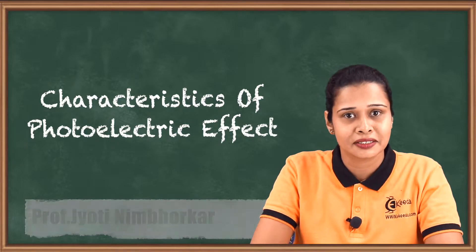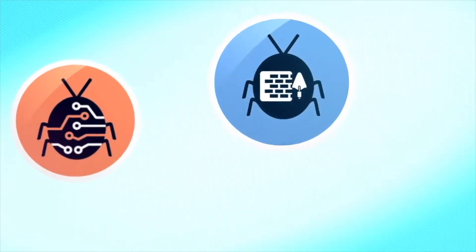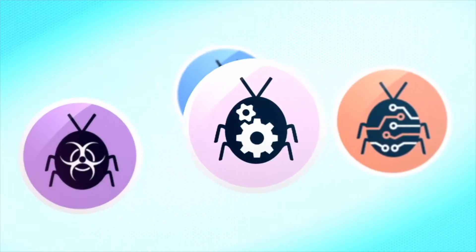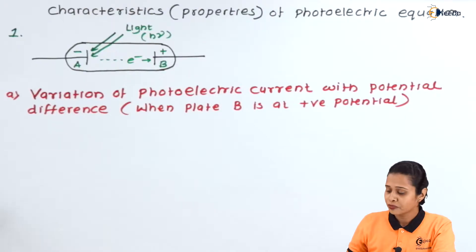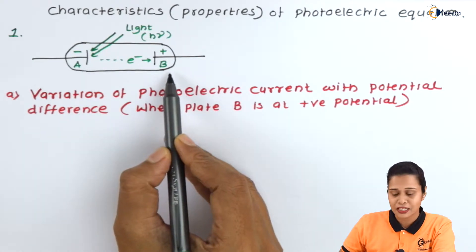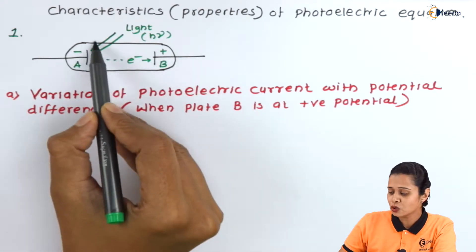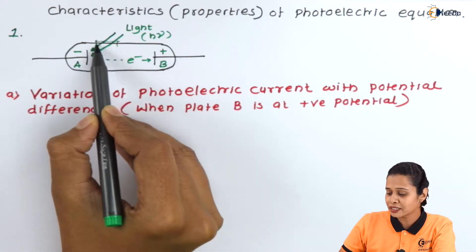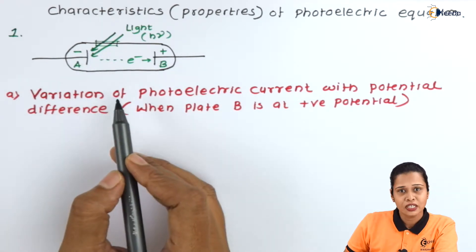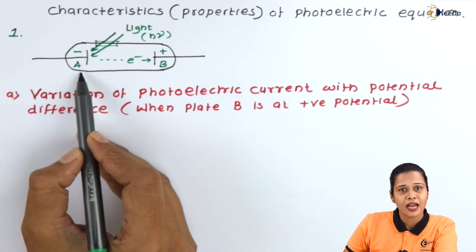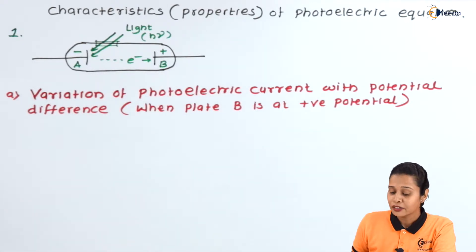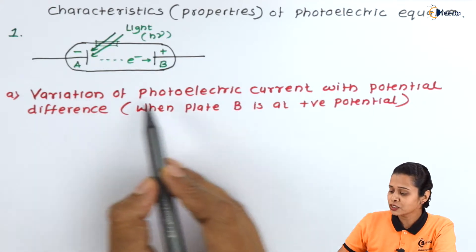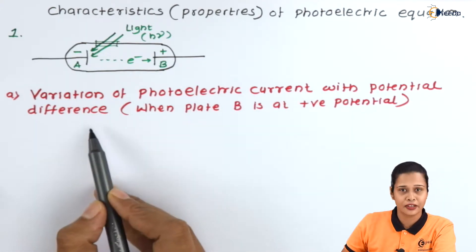Let us see what are the characteristics. This is the arrangement of the photoelectric effect. It consists of an evacuated glass bulb and two metal plates. There is one window so that light can be incident through the window. Initially, we will keep metal plate A at negative potential and plate B at positive potential. We will see the first point: variation of photoelectric current with potential difference.